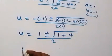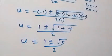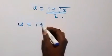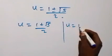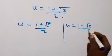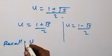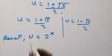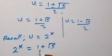Then next, this becomes u equals to 1 plus or minus square root of 5, over 2. So from here we have two possible cases for u. The first is u equals to 1 plus root 5 over 2, and the second is u equals to 1 minus root 5 over 2. Then let's recall that we represented u as 2 raised to the power x, which implies 2 raised to the power x equals to 1 plus root 5 over 2.